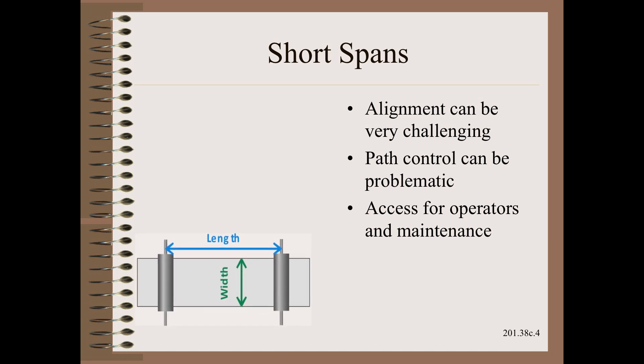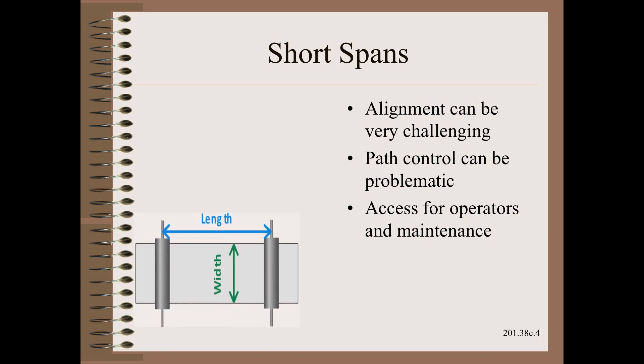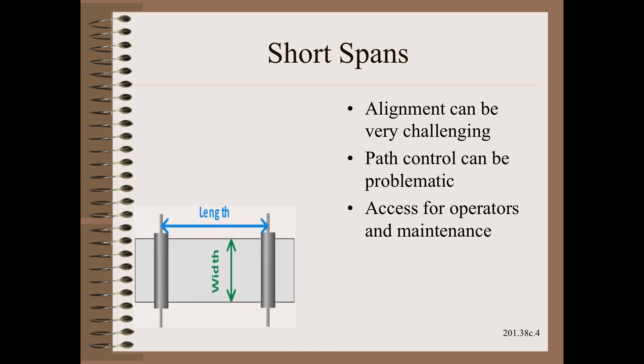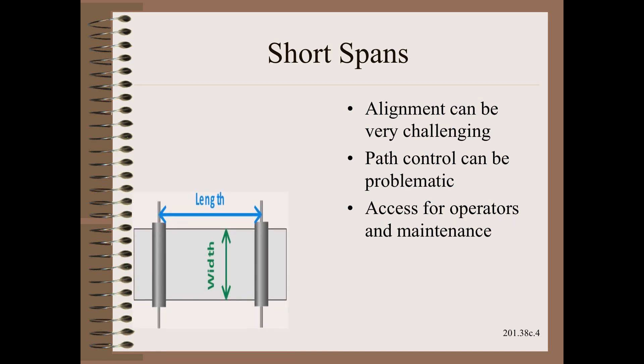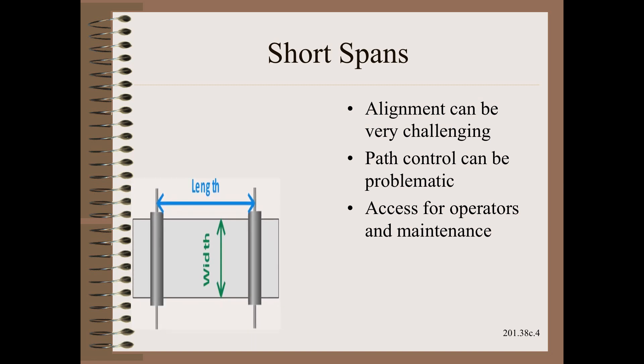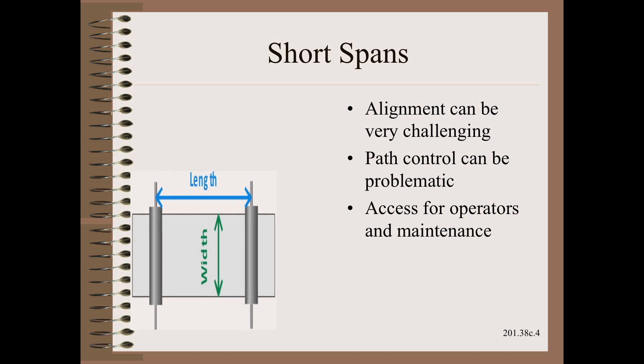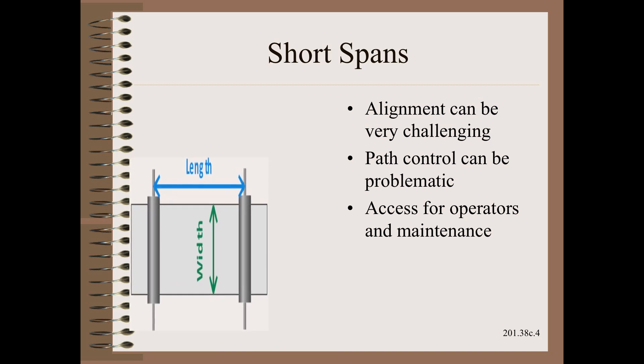However, as you should come to suspect, shorter is not necessarily better either if you go too far in that direction. First, alignment of short spans can be very challenging as the paper industry has known for a half century and wide format printing machines are just starting to figure out. Both of those industries are challenged by especially small L over Ws.